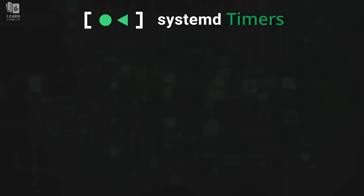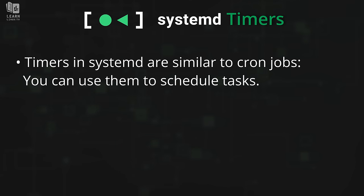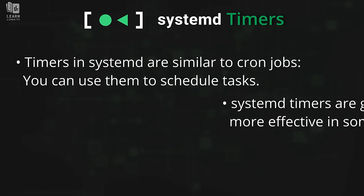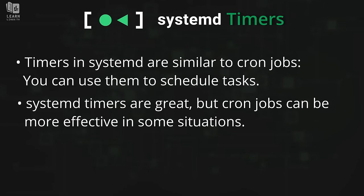Cron jobs give you the capability of setting up a task to automatically run according to some sort of schedule. For example, you might want to run a script at midnight every single Friday. Cron is a great way to do that. When it comes to what makes Systemd timers better than cron jobs — here's the thing — they're not. The point of this video is to educate you on what Systemd timers are and how you go about using them, so that you can decide for yourself which one to use.